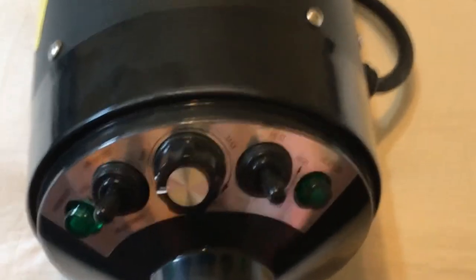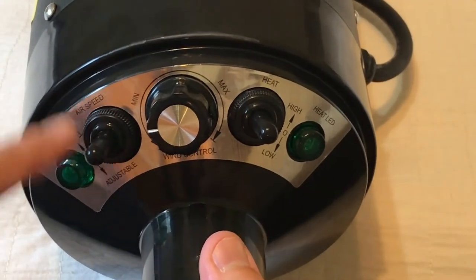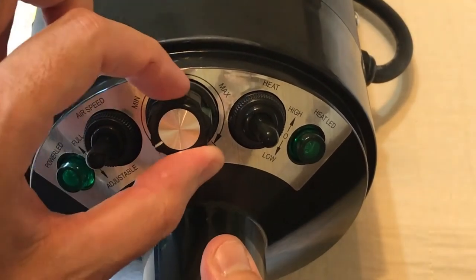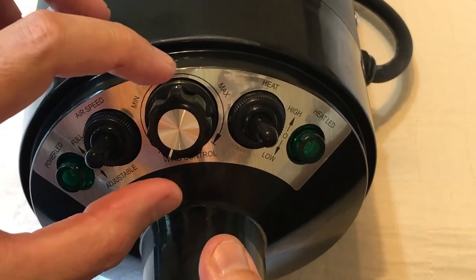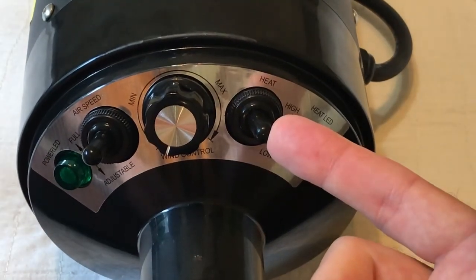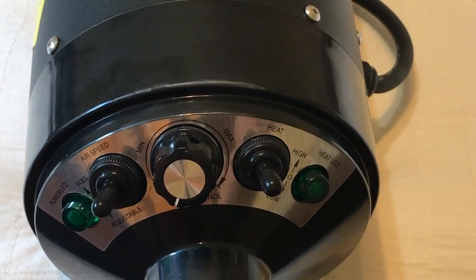And that's pretty much it. Really basic. An airspeed knob has to either be on full or it has to be on adjustable. If it's on adjustable, you can use the wind speed knob here in the middle to control the exact wind speed that you're wanting. And then you've got the option to use heat. That's it. Pretty basic. I hope this video helps. Thanks for watching.